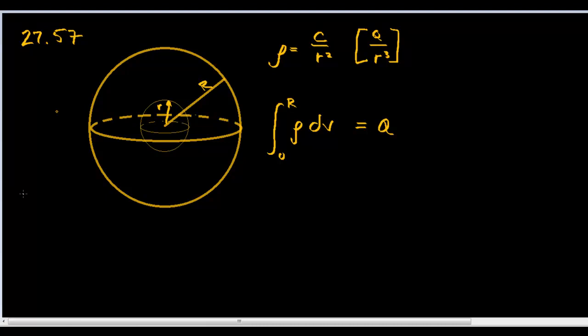And they give us a hint that says, let dV be a spherical shell of radius r. So let's imagine a sphere that has a shell, and the thickness of the shell is dr, and dr is shrinking down to nothing.